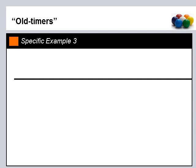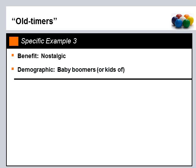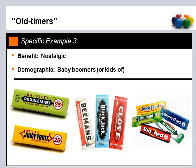The third example is the old timers group. The benefit is nostalgia, and the demographic is baby boomers or kids of baby boomers. Looking at specific examples: Wrigley's Doublemint gum — 'double your pleasure with Doublemint gum' — Juicy Fruit, Clove gum, and Big Red. I say baby boomers because I remember my parents and grandparents carrying this gum. As a child of a baby boomer, if I wanted gum, this is what I would get. There are still times I purchase this gum just because I remember and desire that specific taste.